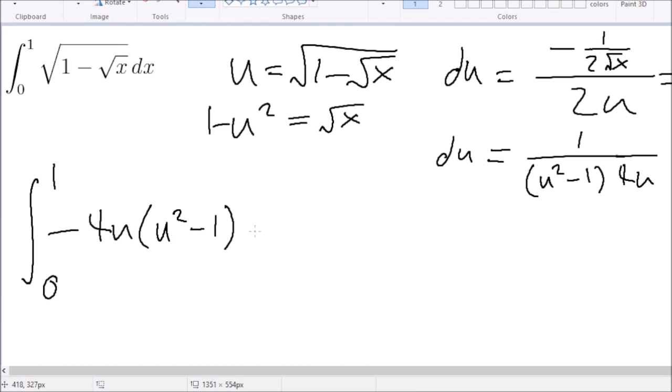Then du. No, no, no. I almost forgot. Oh, wait, wait, no. That should be, this should be u square. Then du, because of this u. Okay. Then this is equal to 0 to 1. This is actually not as bad as I thought. We get 4u square minus 4u to the power of 4 du.